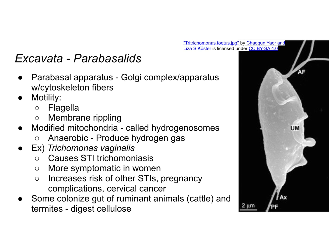The parabasalids get their name from a parabasal apparatus, which is a modified Golgi apparatus complex with cytoskeleton fibers associated with it. For mobility, they have flagella. They also have a modified mitochondria called hydrogenosomes. The mitochondria perform anaerobic chemical reactions that produce hydrogen gas — that's where the 'hydrogen' in hydrogenosome comes from.